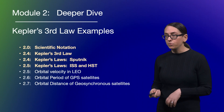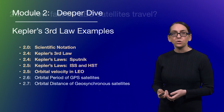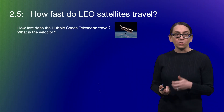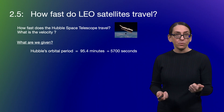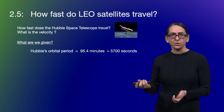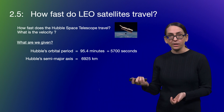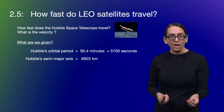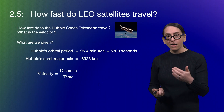Also in segment 2.5, we talked about the orbital velocity in low Earth orbit. Let's actually calculate this for real. The question was: how fast do LEO satellites travel? We'll do this for the Hubble Space Telescope — what is the velocity that Hubble is traveling in its orbit? What are we given? We're given Hubble's orbital period: 95-and-a-bit minutes, which I'll instantly convert to seconds — about 5,700 seconds. We also know Hubble's semi-major axis, which we calculated earlier: 6,924 kilometers. Velocity is distance over time — that's our equation.